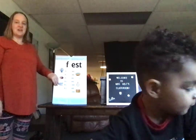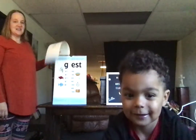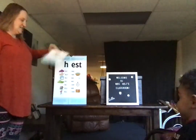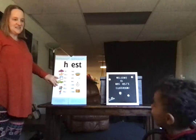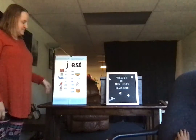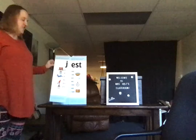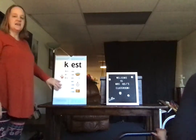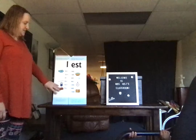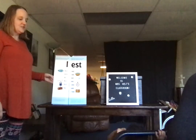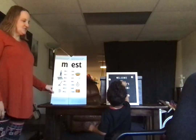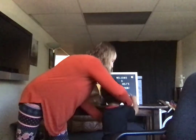Everybody say guest. Now change the g to h — and the word is hest. Everybody say hest. Hest. Now change the h to ch — and the word is jest. Everybody say jest. Now change the j to k — and the word is kest. Everybody say kest. Now change the k to l — and the word is lest. Lest. Everybody say lest. Now change the l to m — and the word is nest. Everybody say nest.